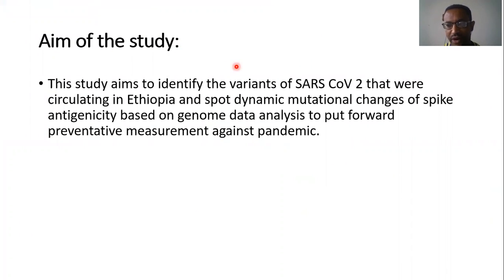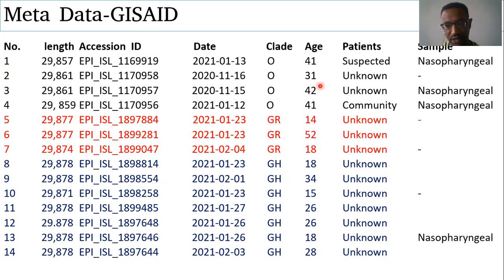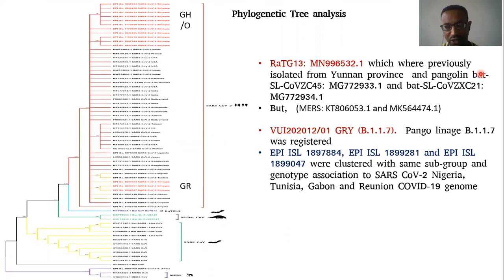The aim of this study is to identify the variants of SARS-CoV-2. This is the data collection summary. The nucleotide genome size is approximately 29,000. These are the accession IDs and collection dates. The minimum age infected with SARS-CoV-2 was 18, and the maximum age was 52. The status of most patients was unknown, and samples were taken from the virus isolates.